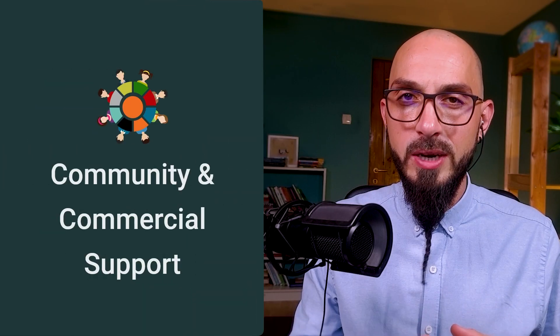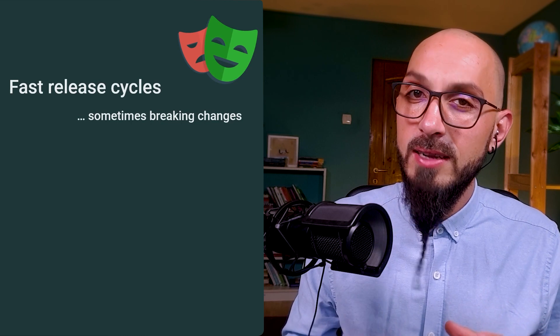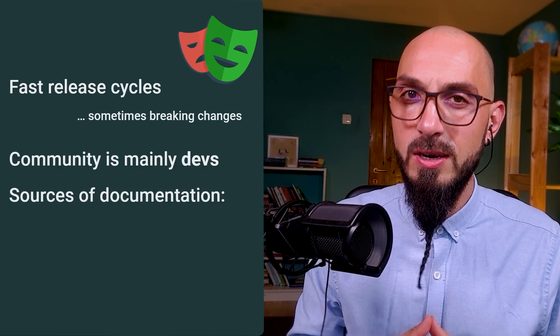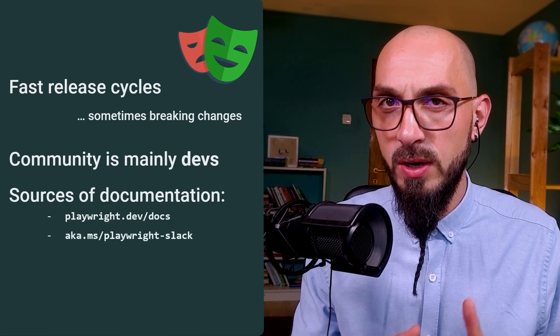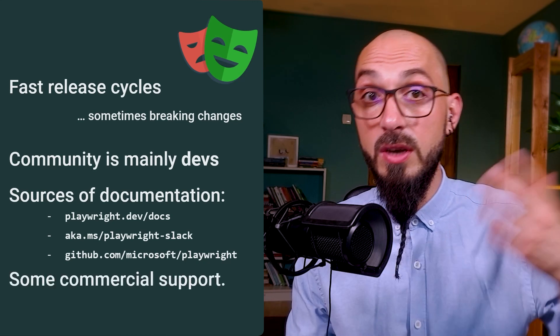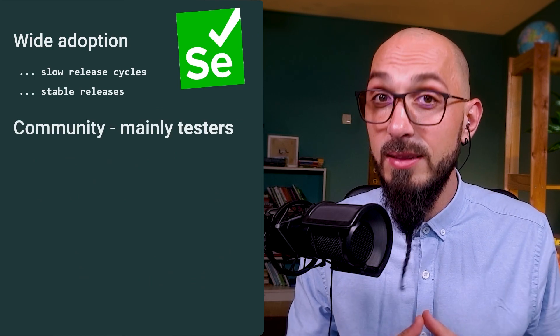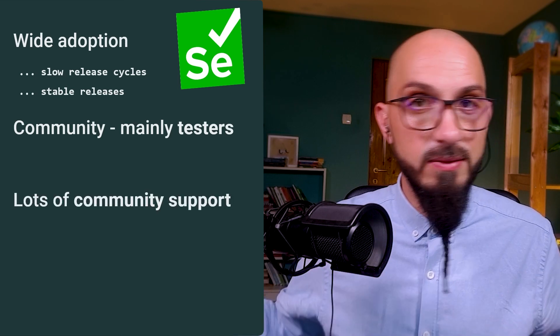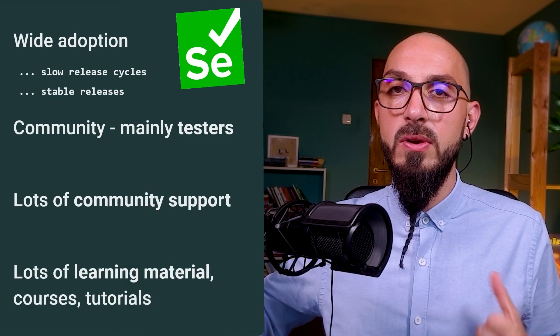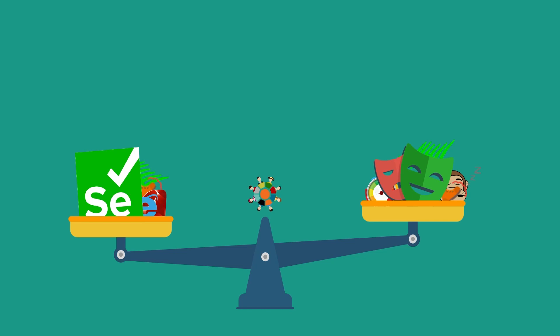The next one we're looking at is community and commercial support. Playwright has fast release cycles, and because it's still new, some of them come with breaking changes. The community behind it is mainly developers. The three main sources of documentation are its official page, a very responsive Slack channel, and GitHub. As it's still new, there are only a couple of companies offering commercial support. On the other hand, Selenium comes with slower release cycles, which means most of its releases are stable. The community behind it is mainly testers. It's a well-established tool with lots of community support, learning material like courses and tutorials, and lots of companies offering commercial support. So this badge of honor goes to Selenium.